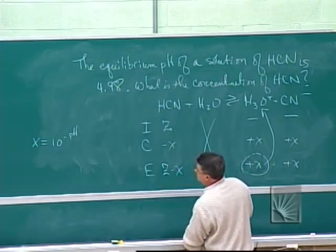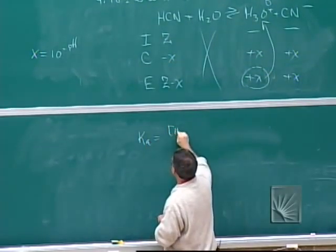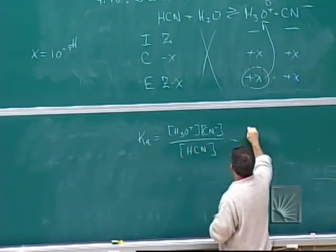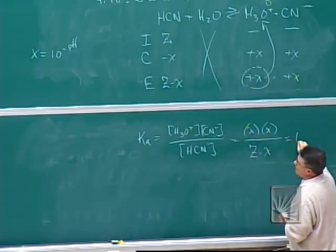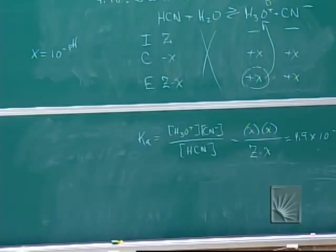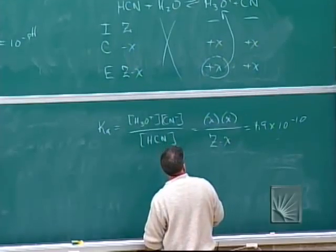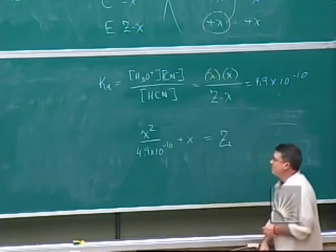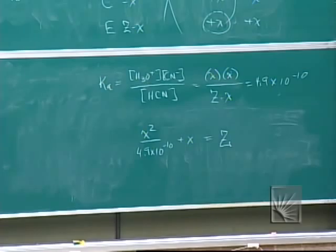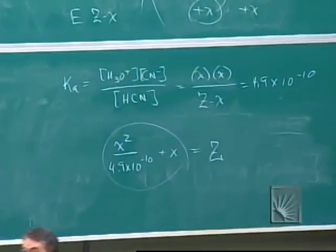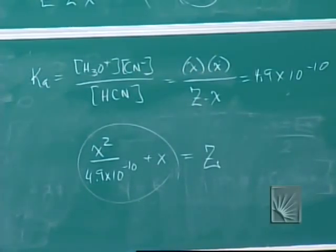KA equals X times X over Z minus X. And since we know X in this, it just becomes, I'll just rearrange it so that I can get it. X squared over 4.9 times 10 to the minus 10 plus X equals Z. I think I did my algebra right. Bring that over, bring that down, add it, yeah. Well, and we know X because we've already said 10 to the minus pH is equal to X. So we know everything here. And Z, Z is my initial concentration of HCN. So it ends up, this is actually a trivial problem once you stare at it for a moment.